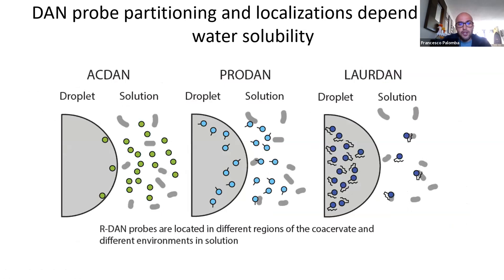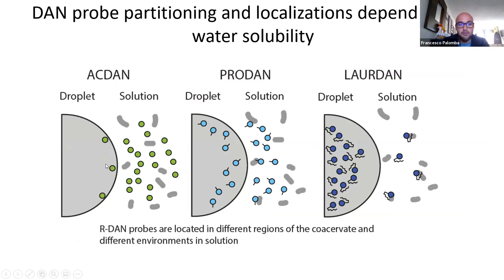We chose these three probes because their partitioning depends on their water affinity. In our initial model, acdan would most likely sit on the surface, prodan could penetrate a little deeper, and laurdan should target the most hydrophobic pockets.